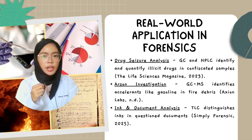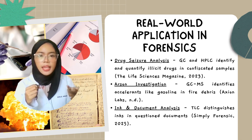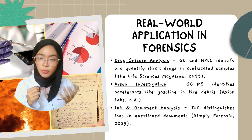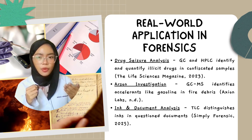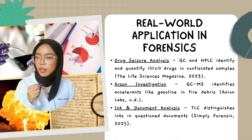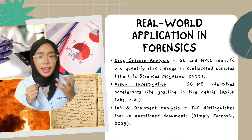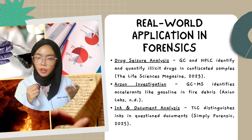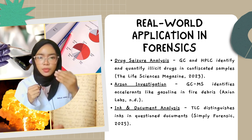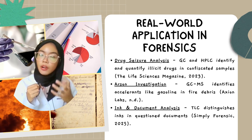Next is fire investigation, where GC-MS is used. It can detect traces of accelerants like gasoline in debris, helping to determine whether a fire was accidental or deliberate. Lastly, in ink and document analysis, using TLC and paper chromatography, investigators can compare ink from a suspicious note to a suspect's pen, helping to prove forgery or tampering.